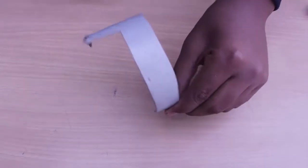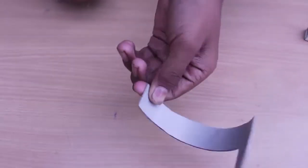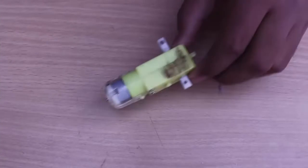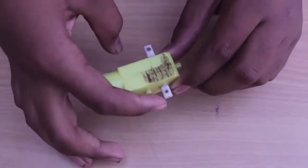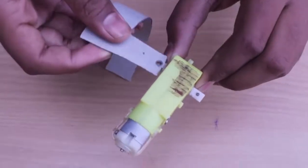You will need 4 such PVC semi-circular hoops. Now this is a special motor with a dual shaft and an inbuilt gearbox which reduces the speed.